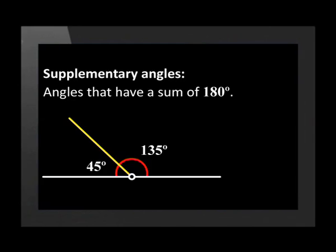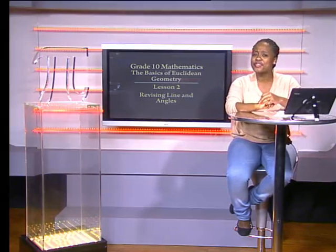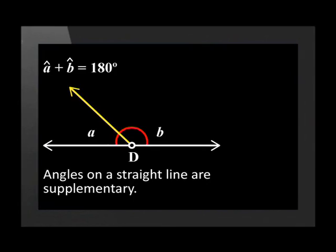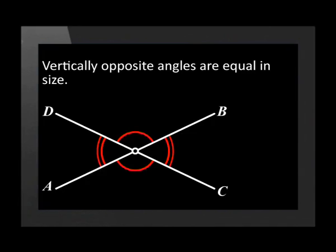Supplementary angles have a sum of 180 degrees — these angles are both supplementary and adjacent. Now we'll look at the rules about angles. Here's a theorem you need to know: angles on a straight line are supplementary — in other words, angle A plus angle B equals 180 degrees. Angles around a point have a sum of 360 degrees — angle A plus angle B plus angle C equals 360 degrees. Lastly, vertically opposite angles are equal in size; these angles are formed at the point of intersection of two straight lines.